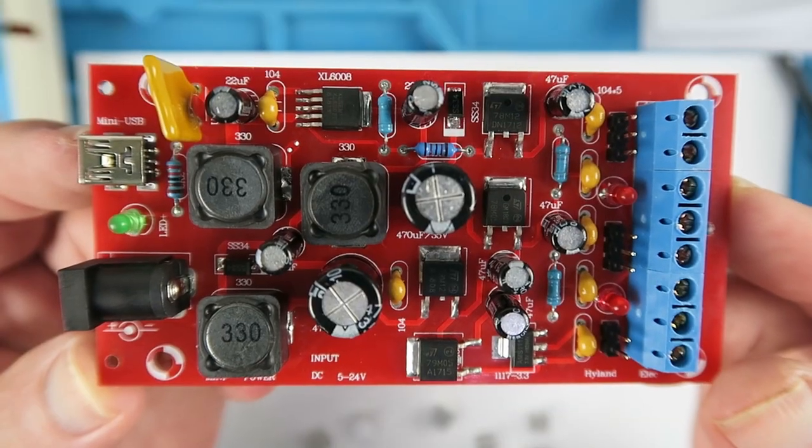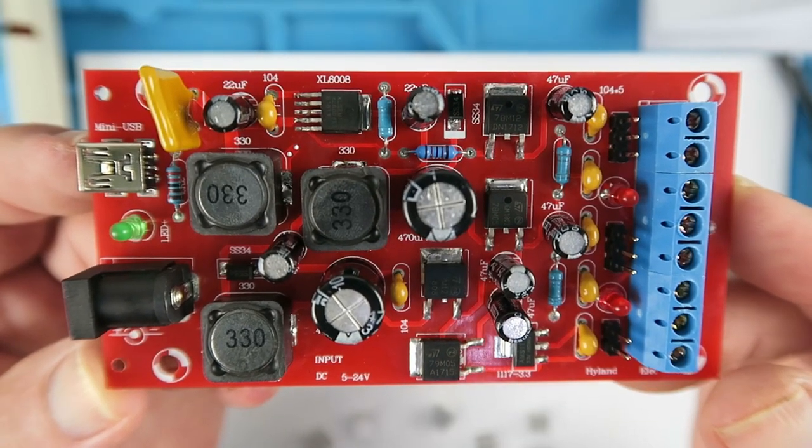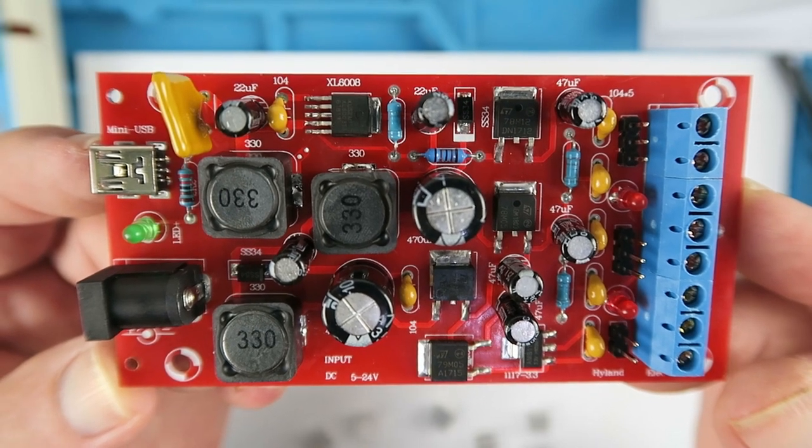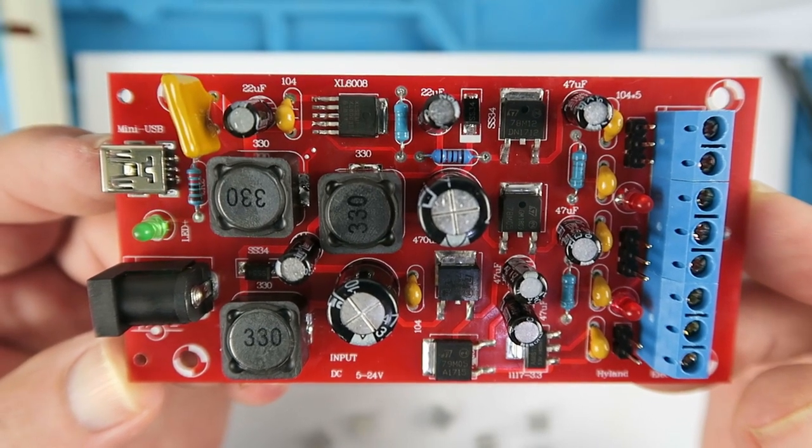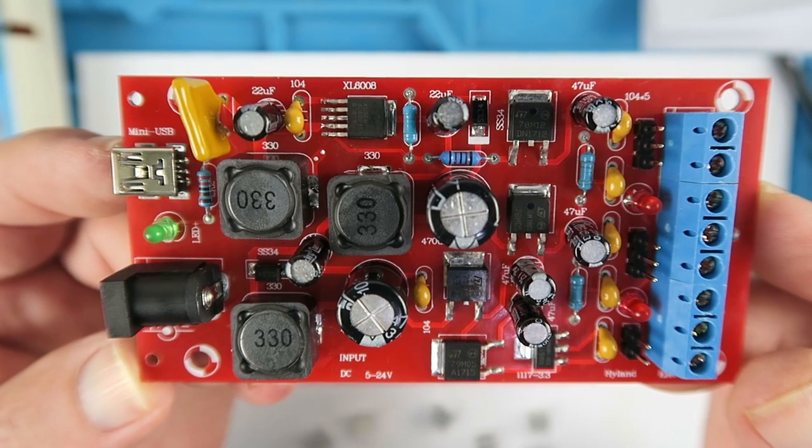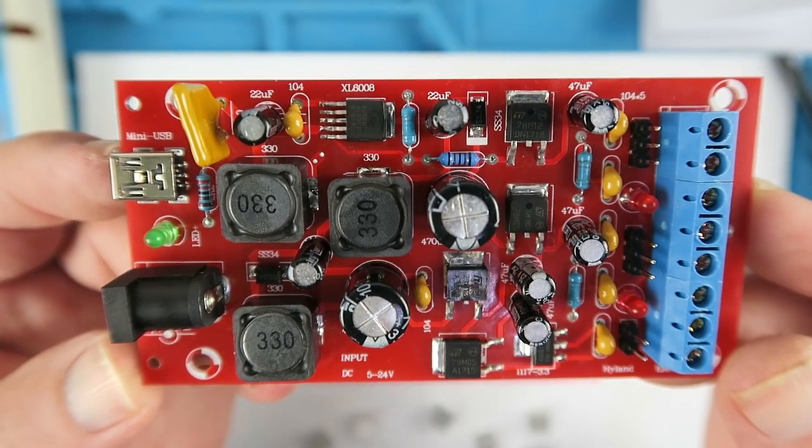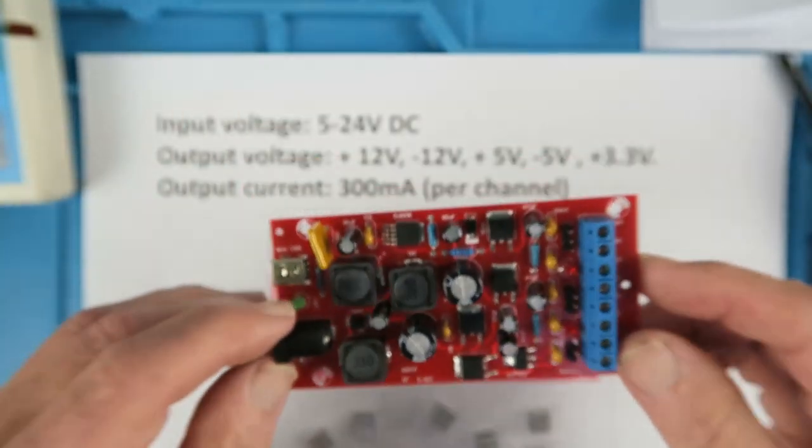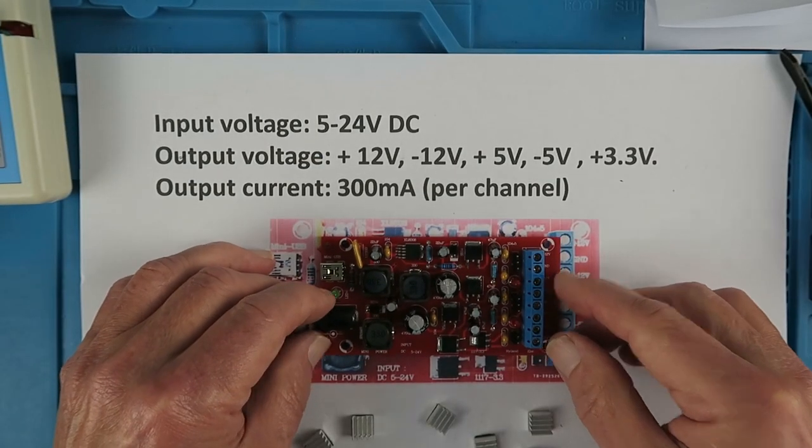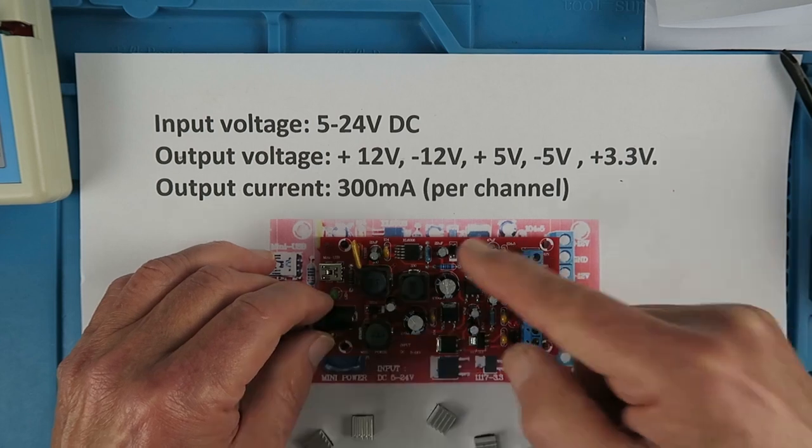Now the board is complete and I've done a visual inspection. Make sure that as far as I can tell everything is in the correct place so that we can do our first turn on test. Before we do that we need to place the heat sinks for the regulators and the boost converter.